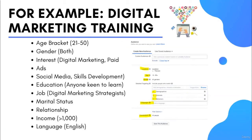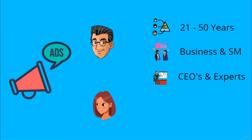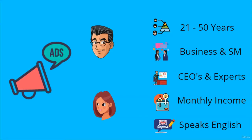Once the buyer persona is created, advertisers navigate to the audience section to map their selection. Facebook will also suggest relevant target options. The ad will be shown to both males and females aged 21 to 50, with interests in business, social media marketing, and skill development, with job titles of CEOs and digital marketing experts, keen to execute digital marketing strategies, with a monthly income over $1,000, who speak and understand English.